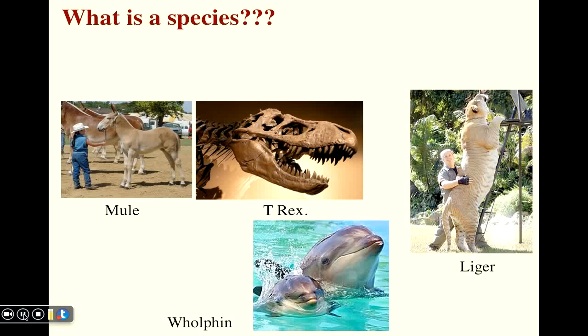And first of all, let's address this basic question: what is a species? It's not as easy or straightforward as you might think. For example, consider the samples on the screen here. Mules, ligers, wolfens - these all represent hybrids formed by the union of two separate species.